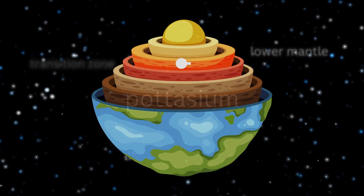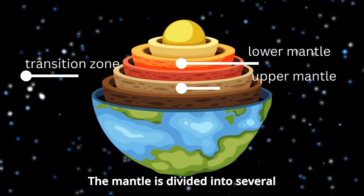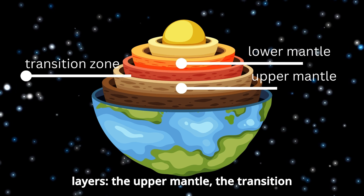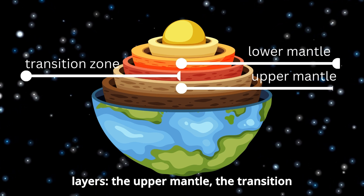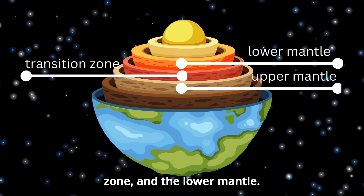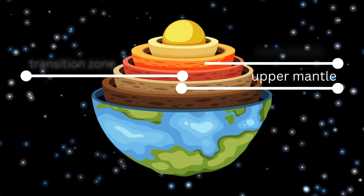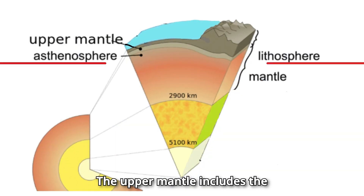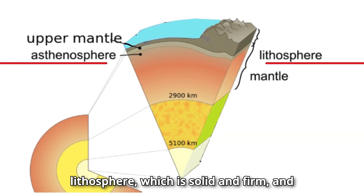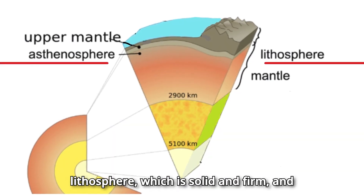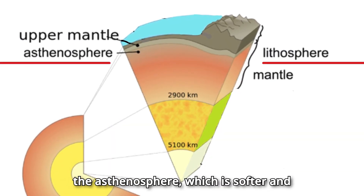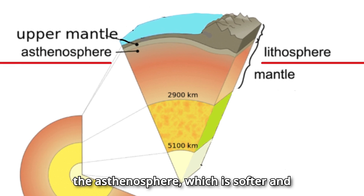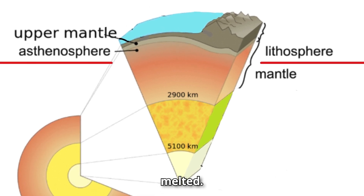The mantle is divided into several layers: the upper mantle, the transition zone, and the lower mantle. The upper mantle includes the lithosphere, which is solid and firm, and the asthenosphere, which is softer and partially melted.